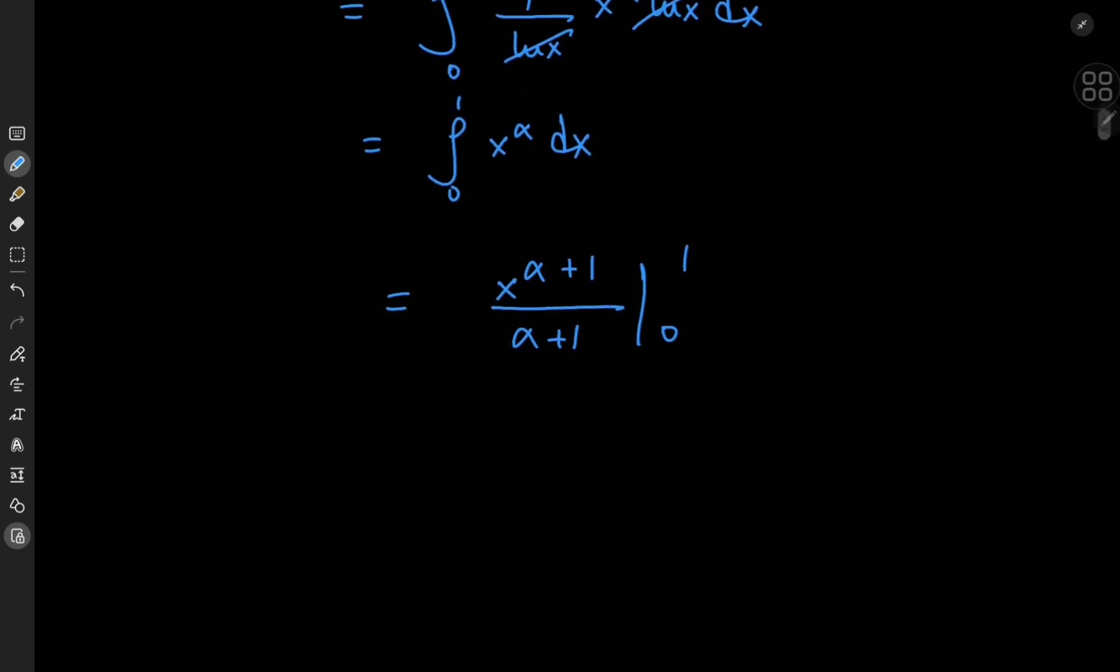In the limit as x goes to 0, we get a big bad 0, and as x approaches 1, 1 to something is 1 anyway. So we're left with the derivative of i with respect to alpha being 1 by alpha plus 1.